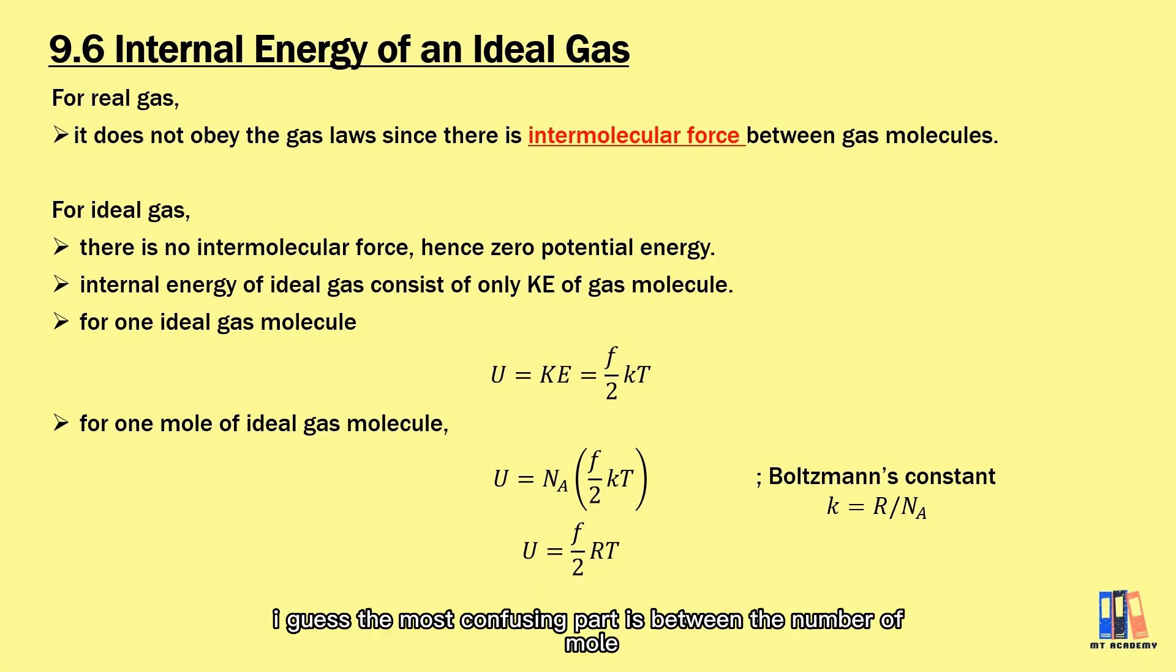To conclude this chapter, I guess the most confusing part is between the number of moles and the number of molecules. Basically from what I can see, Boltzmann constant is linked with the number of molecules, while the molar gas constant is with the number of moles. The next thing is about the degree of freedom. You need to check the type of molecule and also the temperature if it is a diatomic molecule which is covered in your syllabus. You can revise again the formula duration and make sure you are clear with those formulas.